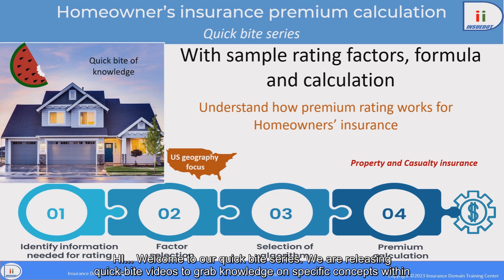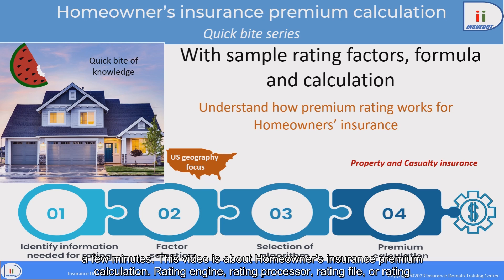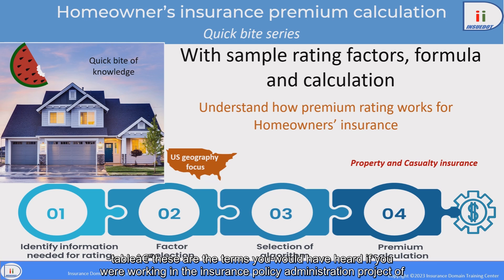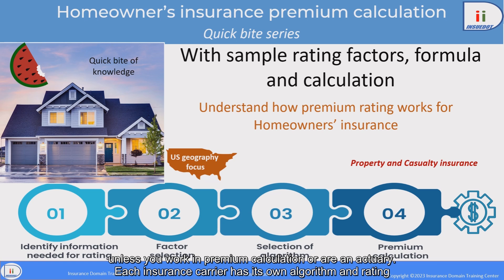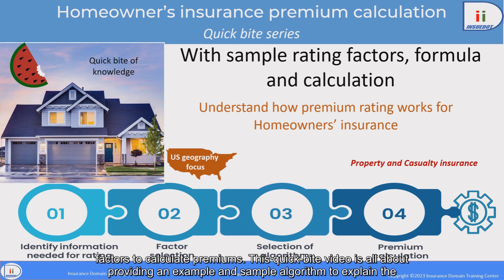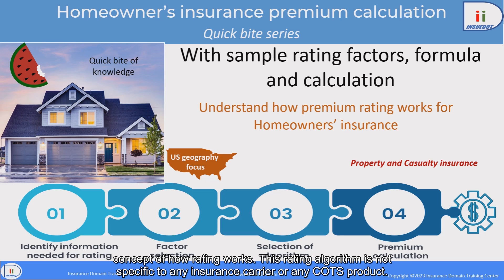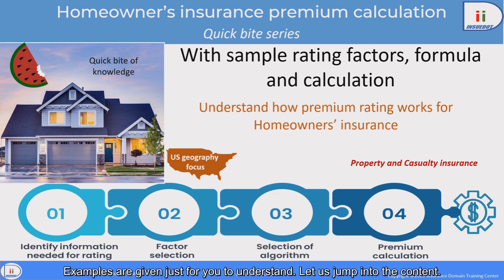Hi, welcome to our Quick Bite series. We are releasing Quick Bite videos to grab knowledge on specific concepts within a few minutes. This video is about homeowners insurance premium calculation — rating engine, rating processor, rating file, or rating table. These are terms you would have heard if you were working in an insurance policy administration project for property and casualty insurance. This Quick Bite video provides an example and sample algorithm to explain the concept of how rating works. This rating algorithm is not specific to any insurance carrier or any COTS product — examples are given just for you to understand. Let us jump into the content.